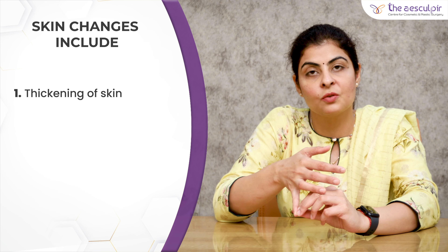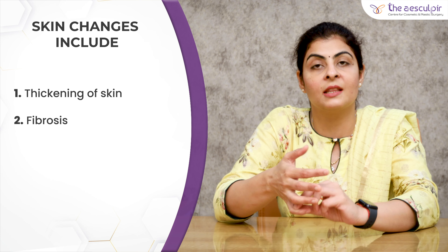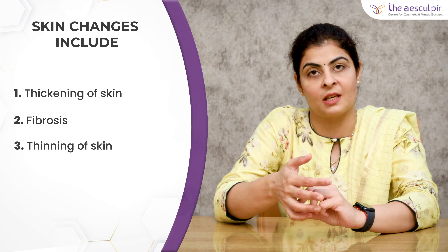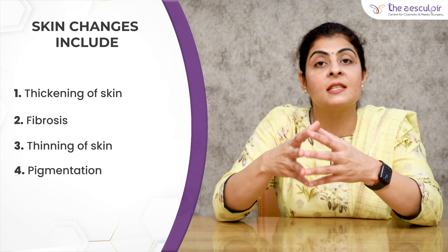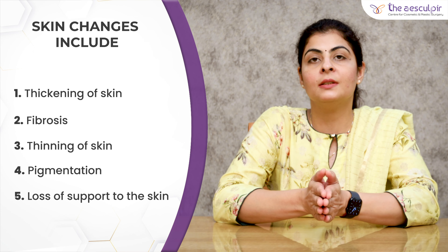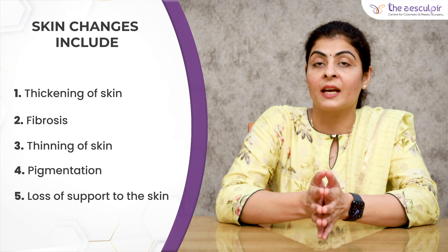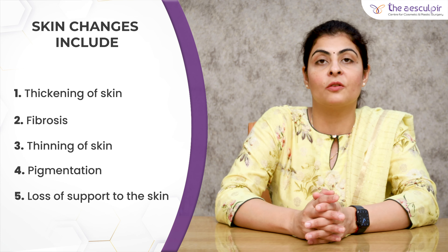If we come to the skin, there can be thickening of skin due to scarring, fibrosis of the skin, or thinning of the skin — all of which can lead to asymmetry. Because of certain pigmentary changes, you might feel there is a shadowing effect leading to asymmetries. There can also be loss of support to the skin because of loss of subcutaneous structure, leading to more sagginess in one part of your face.